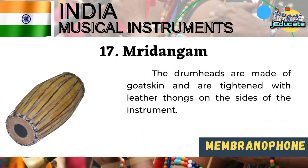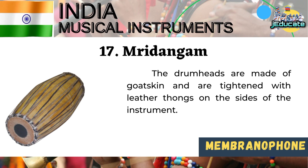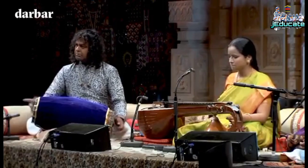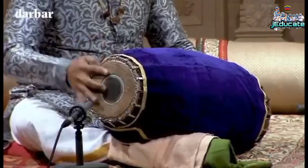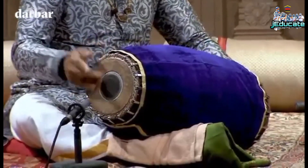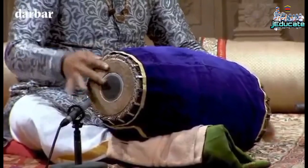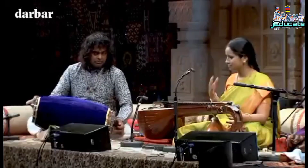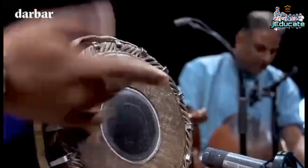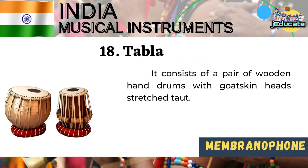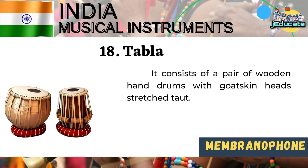Number 17, Mridangam — the drumheads are made of goatskin and are tightened with leather thongs on the sides of the instrument. Number 18, Tabla — it consists of a pair of wooden hand drums with goatskin heads stretched taut.